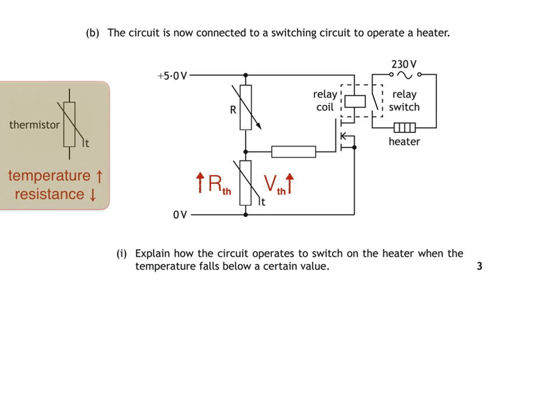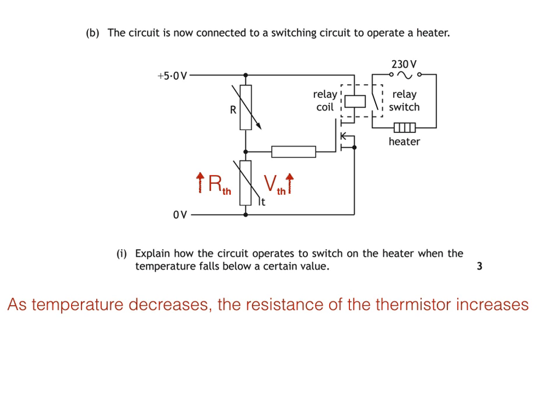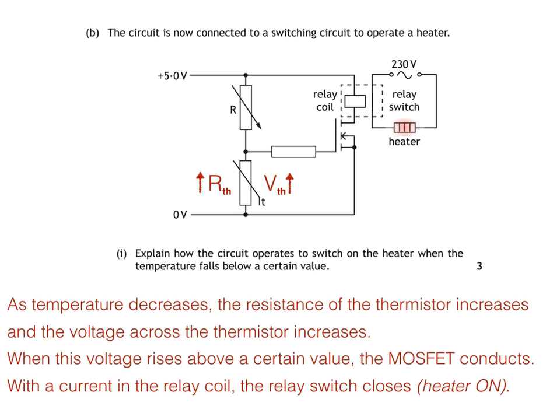To answer the question: as temperature decreases, the resistance of the thermistor increases, and the voltage across the thermistor increases. It's important to make clear that we're talking about the resistance of the thermistor and the voltage across the thermistor. When this voltage increases above a certain value, the MOSFET conducts. With a current in the relay coil, the relay switch closes, so the heater is now on.